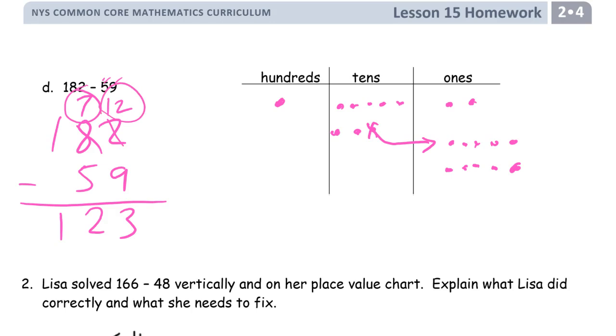And now we can do our subtraction. 9 ones we cross out and 5 tens (1, 2, 3, 4, 5). We have 100 left. We have 2 tens left and we have 3 ones left. 123.